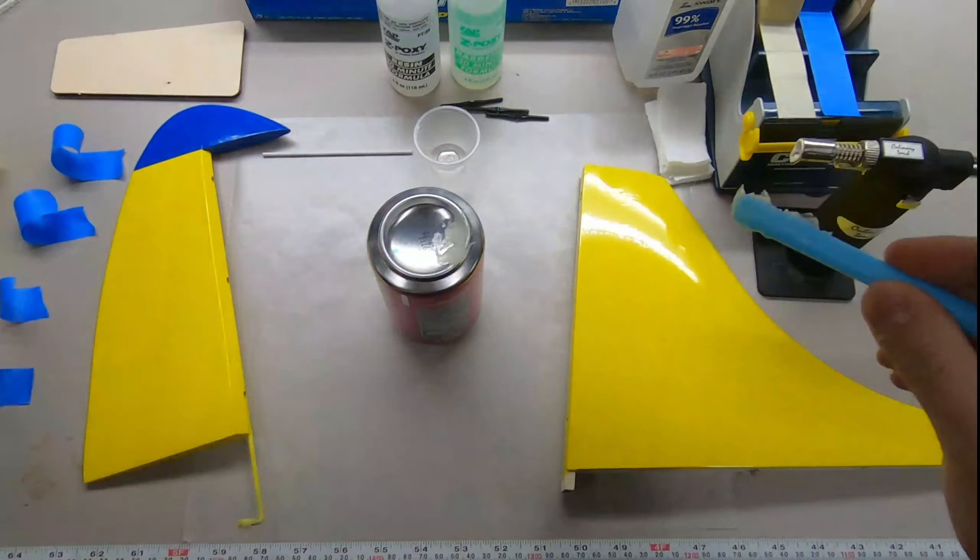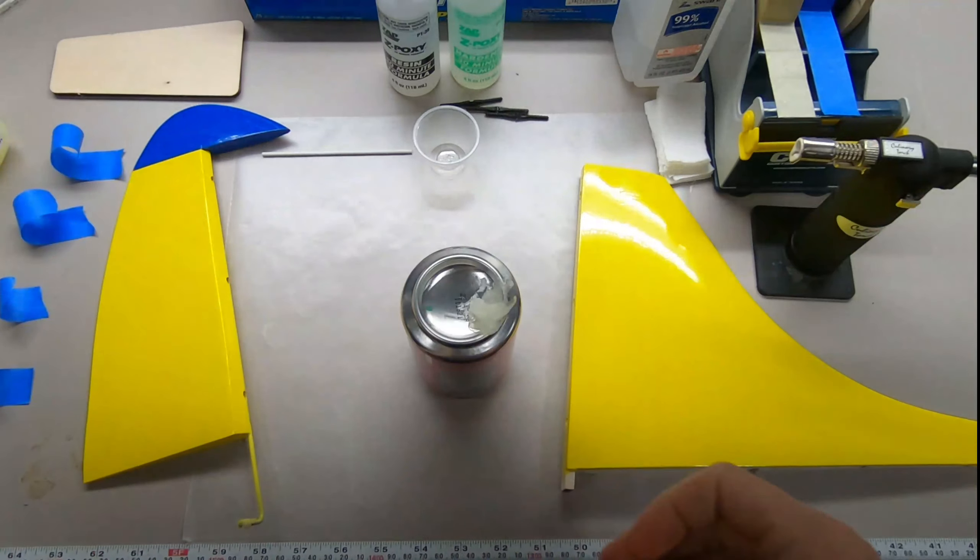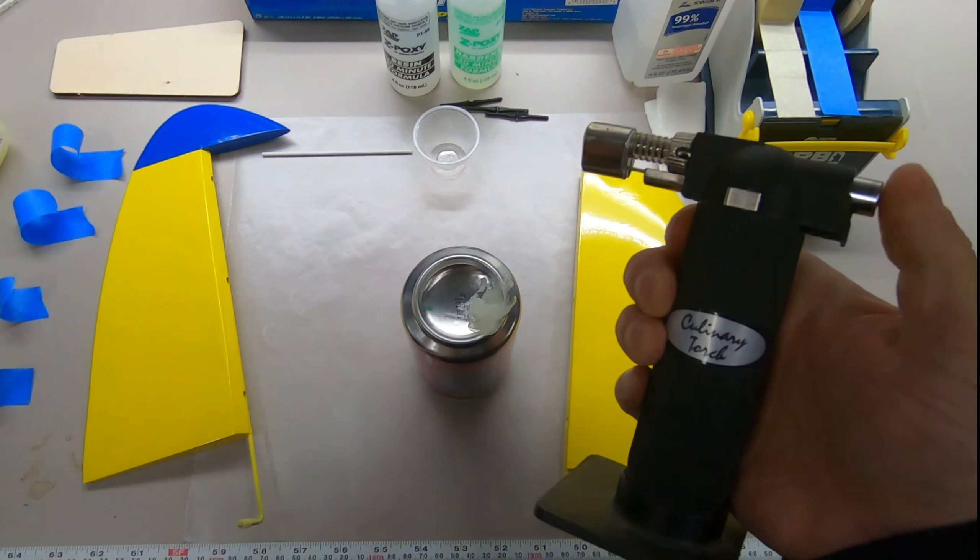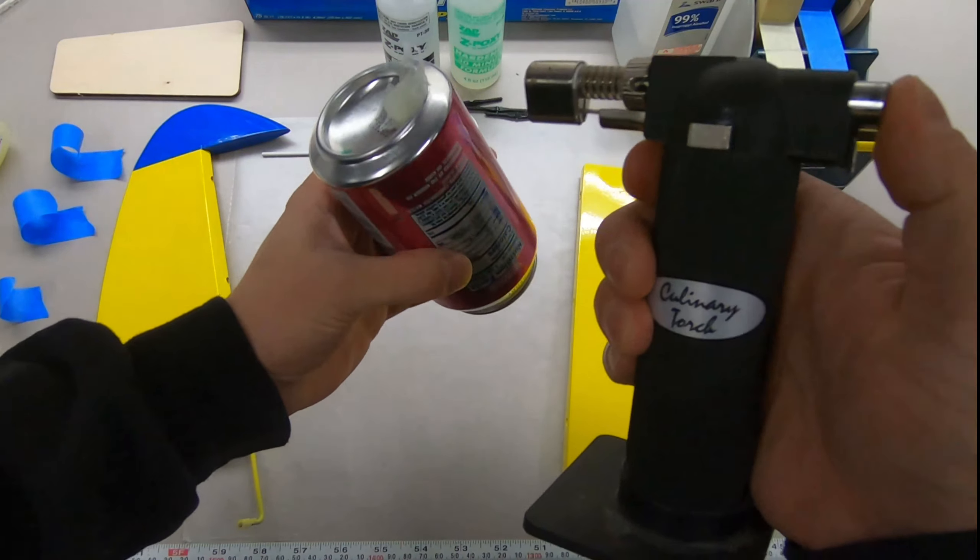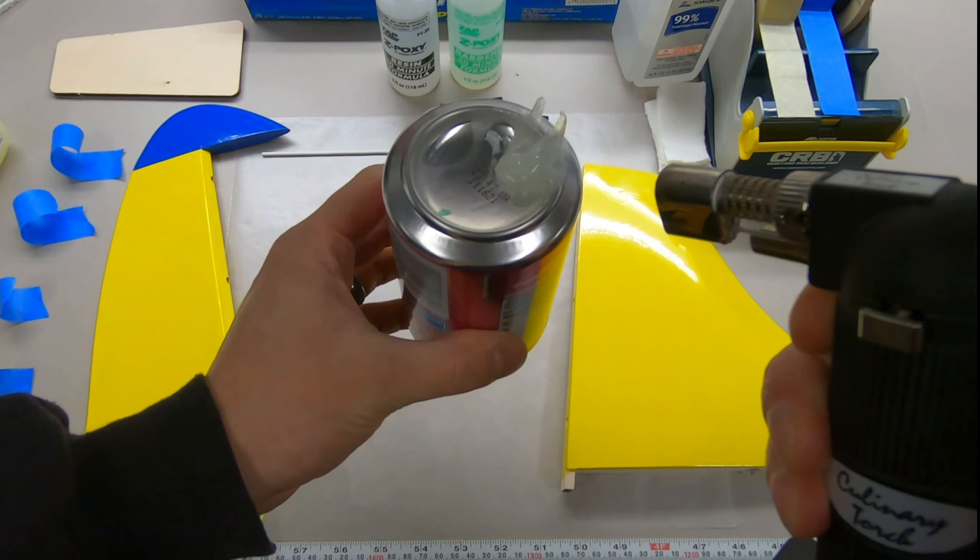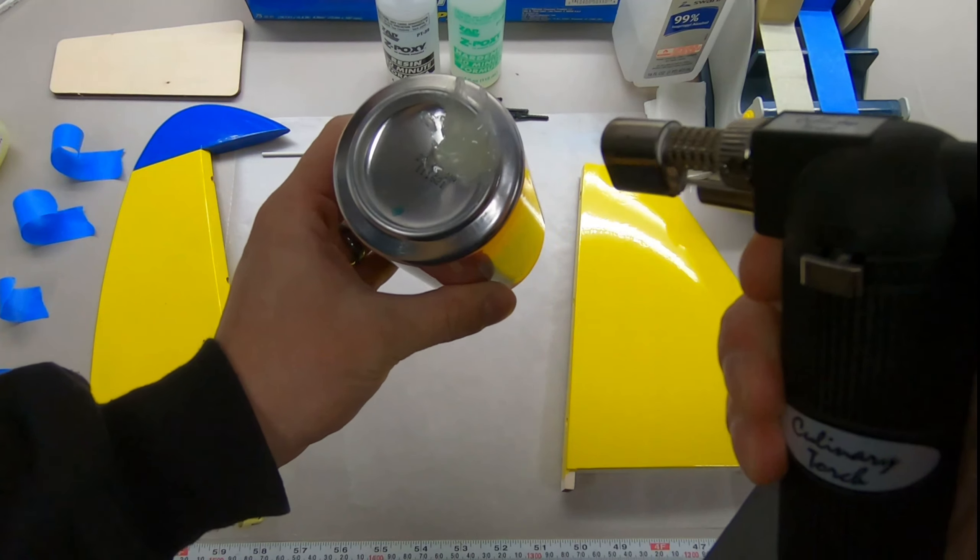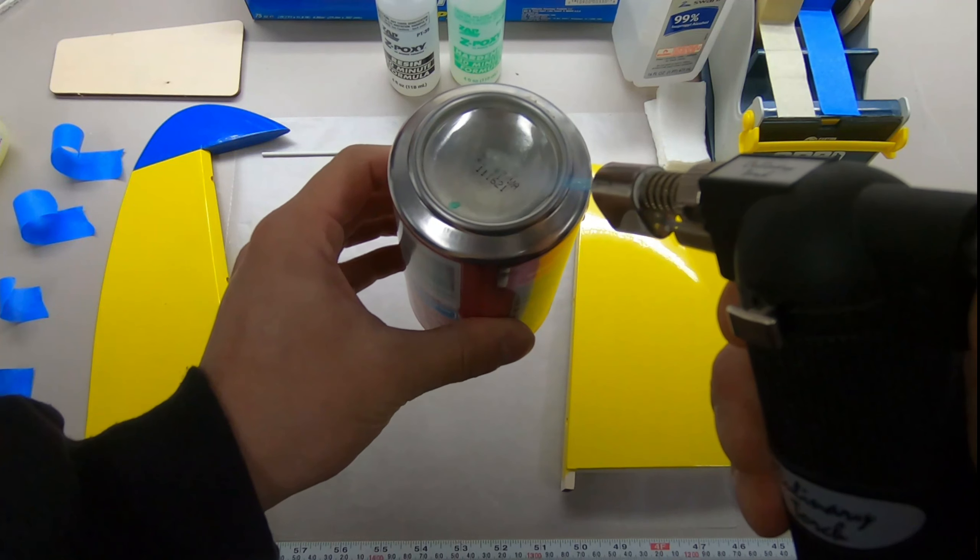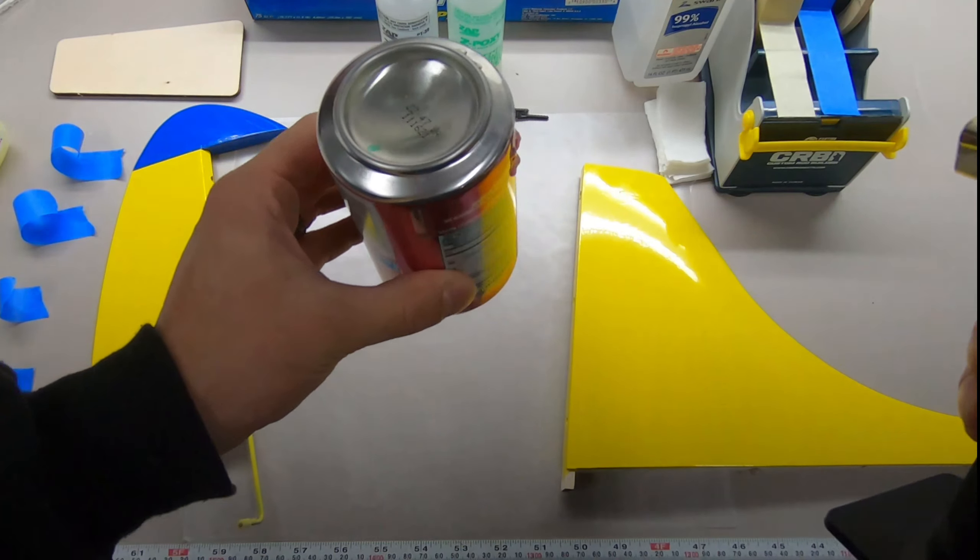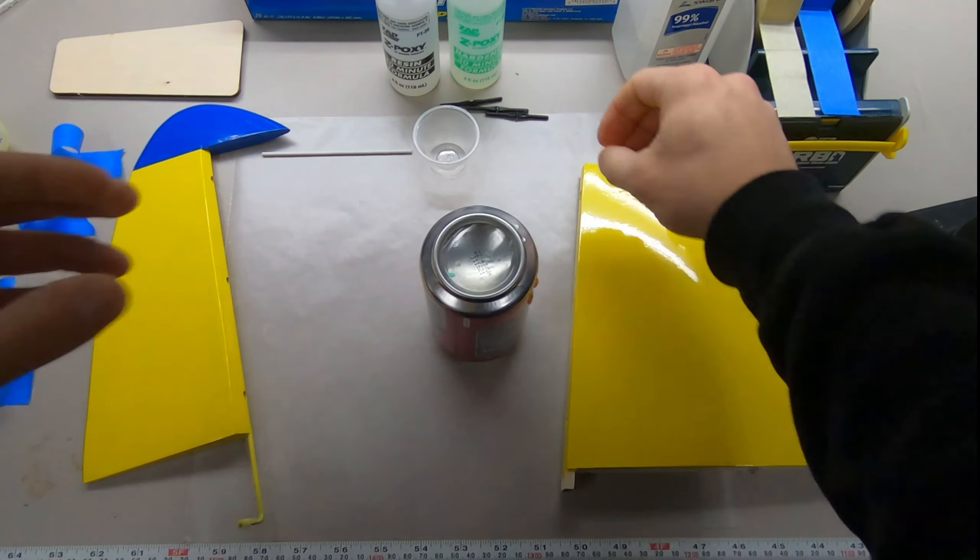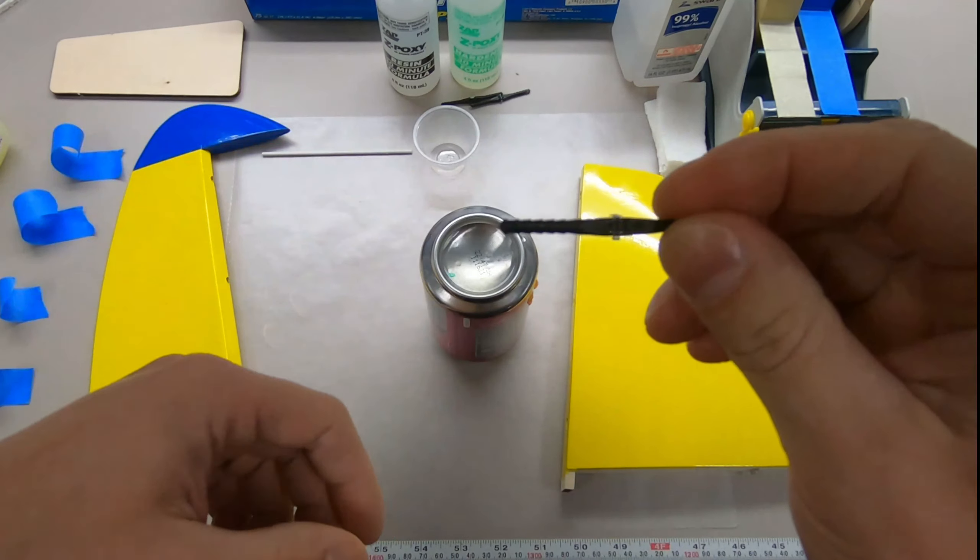So now that I got some on there, I'm going to get a culinary torch, propane torch, whatever you got. We're just going to go ahead and heat this up. It melts.